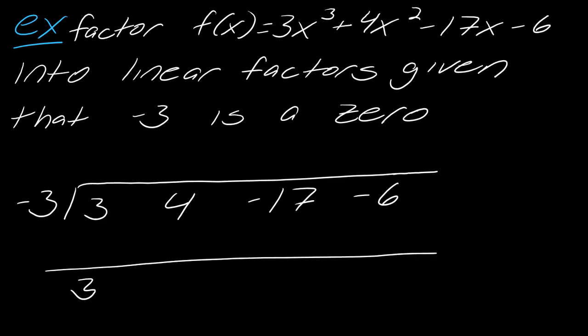And so let's synthetically divide. So bring down the 3. 3 times negative 3 is negative 9. 4 plus negative 9 is negative 5. Negative 5 times negative 3 is 15. Negative 17 plus 15 is negative 2. And then negative 2 times negative 3 is positive 6.